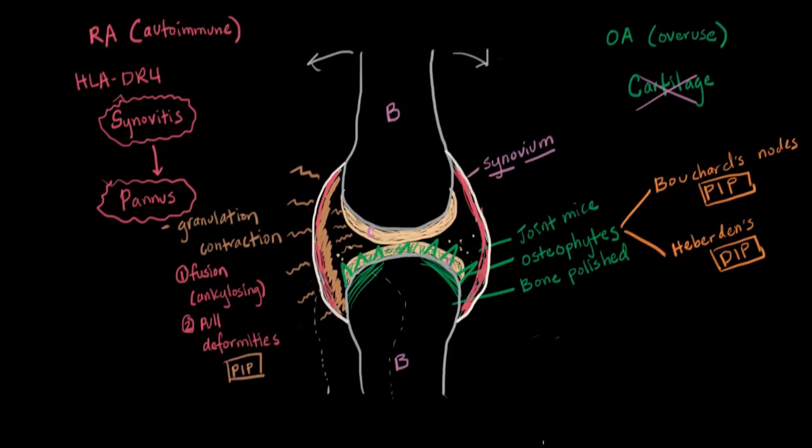So as you can see, RA and OA kind of come from completely different directions. And they affect very different parts of the joint.